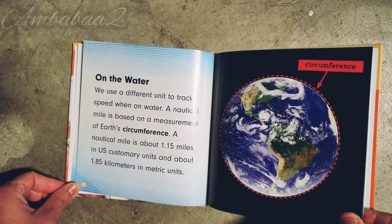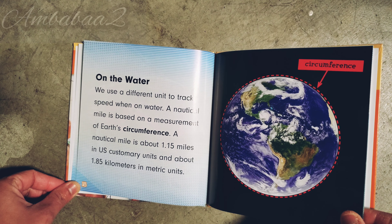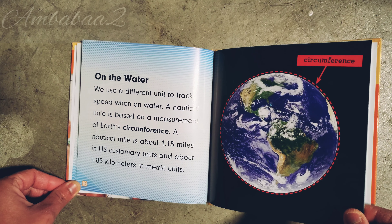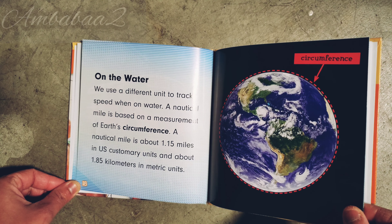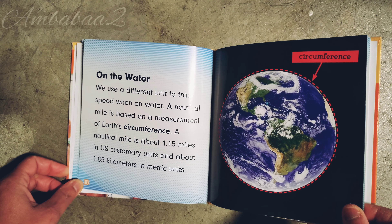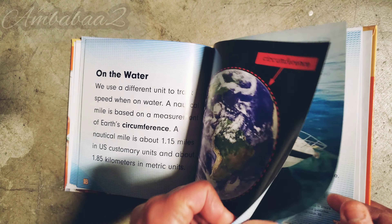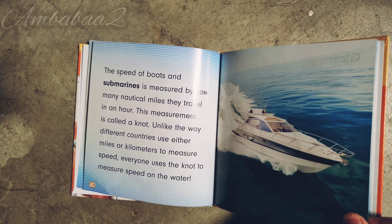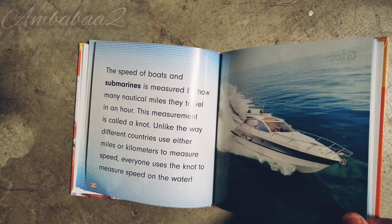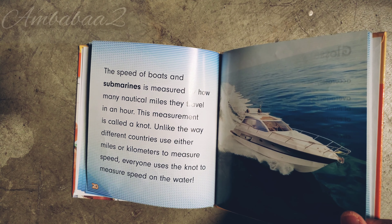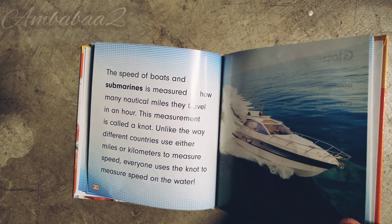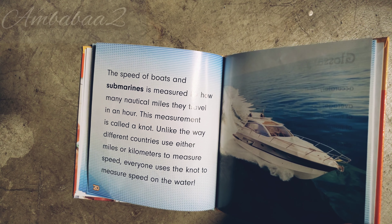On the water: We use a different unit to track speed when on water — the nautical mile. A nautical mile is based on the measurement of Earth's circumference. One nautical mile is about 1.15 miles in US customary units and about 1.85 kilometers in metric units. The speed of boats and submarines is measured by how many nautical miles they travel in an hour. This measurement is called a knot. Unlike the way different countries use either miles or kilometers, anyone on water uses the knot to measure speed.